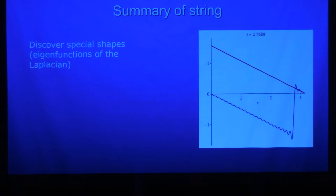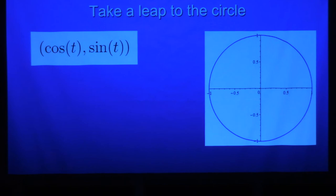So the summary of the string is that, and we're going to see this in many situations, is that you discover some shapes, which are eigenfunctions of the Laplacian. You create your desired starting point from those shapes, and then each individual shape knows how to move forward in time.